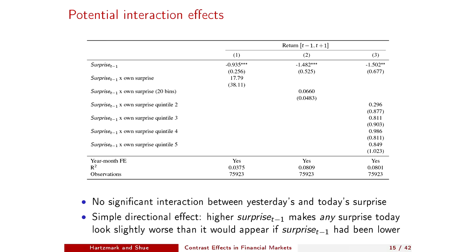Another thing we tested is whether this is a simple parallel shift or a more complex interaction story. We look for an interaction between the surprise yesterday and the surprise today that leads to a differential return response. The level effect remains roughly the same when you add all these different interactions — linear terms, dummy variables — and we don't find much evidence for an interaction. So the strongest effect seems to be the simple kind of parallel shift in contrast effects, consistent with what we find in the psychology lab literature.